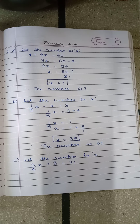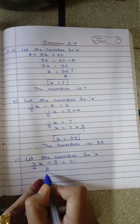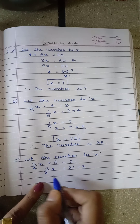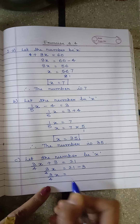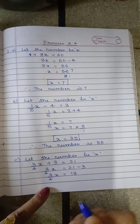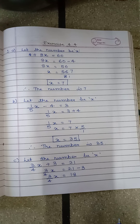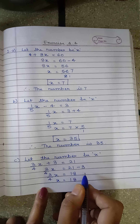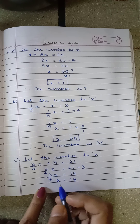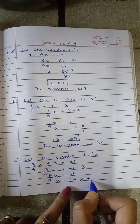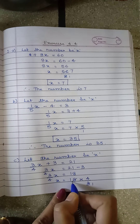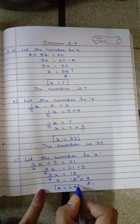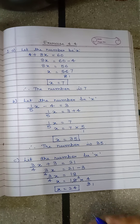Solving: keep (3/4)x on LHS, move +3 to RHS as −3. So (3/4)x = 21 − 3 = 18. To shift (3/4) to the other side, take the reciprocal: x = 18 × (4/3) = 6 × 4 = 24. Therefore the number is 24.